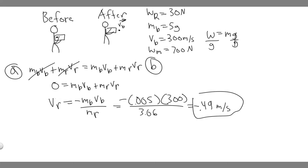Now for Part B, we do the same thing except we have to take into account the man. So instead of just the rifle, we're treating the man and the rifle together as one object. The problem states the man weighs 7 times 10 to the 2 newtons, and we're finding the recoil speed of the man and the rifle combined.